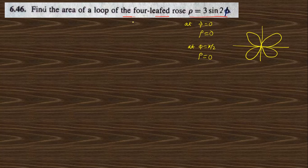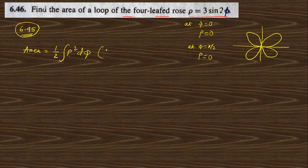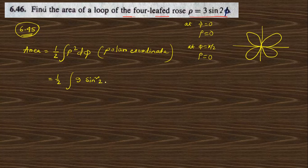From the previous question 6.45 — if you don't know it, please go to the description box where the link is given — we know the area in polar coordinates will be (1/2)∫ρ² dφ. For one leaf the limit will be 0 to π/2. We need to put 1/2 ρ² = 9 sin²(2φ) dφ. So this becomes (9/4) and 2 sin²(2φ) will become 1 − cos(4φ).